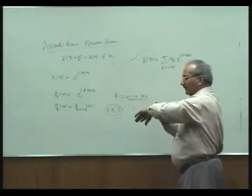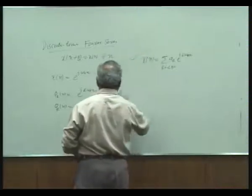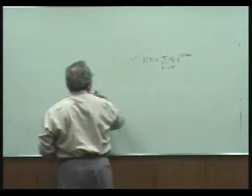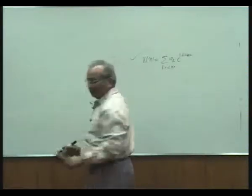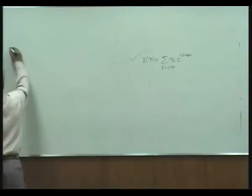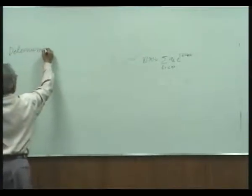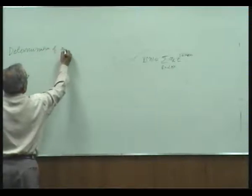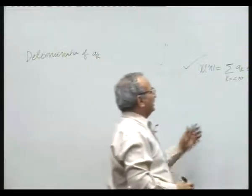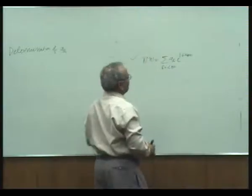How do we determine a_k? For the determination of a_k, we need to find the Fourier coefficient. To determine a_k, let us multiply both sides by a discrete orthogonal function.